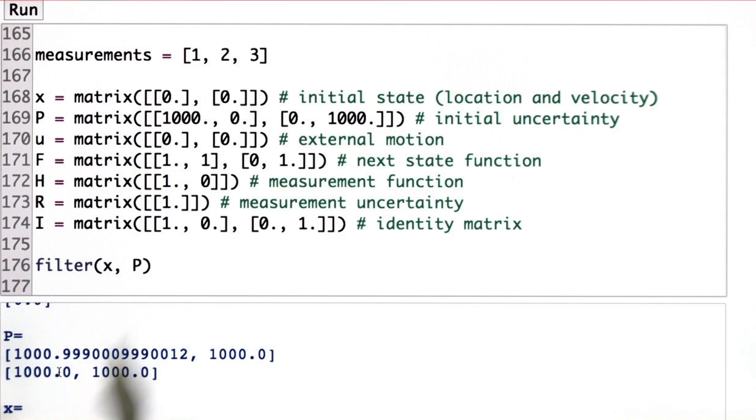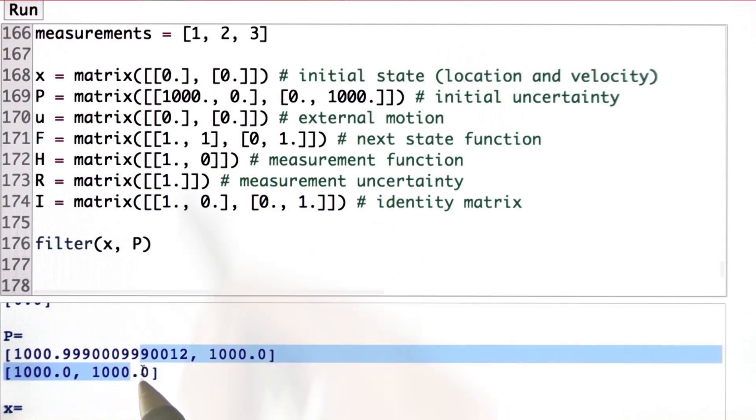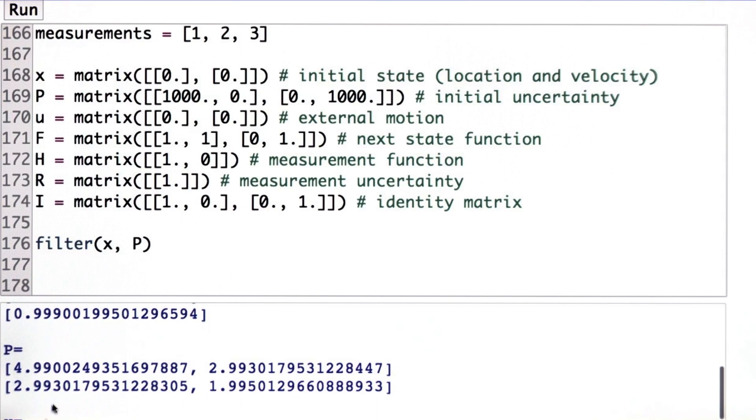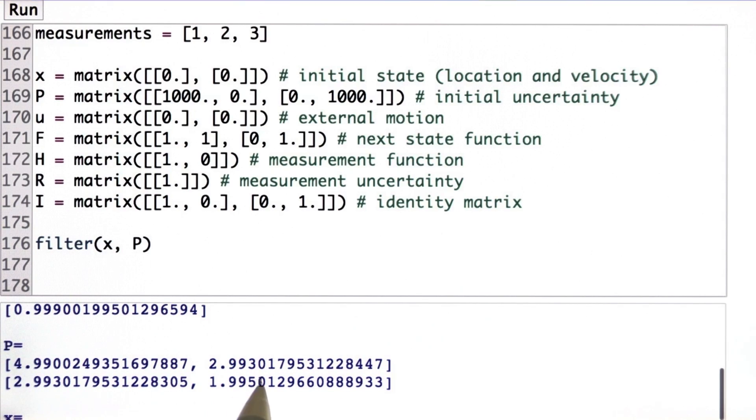And then when I observe again the 2, I want the output to now tell me that my next prediction is 3. It's the observation plus the prediction. But now I have a really good estimate on what the velocity is. It's essentially 1. And the reason is my Kalman filter was able to use the Kalman filter equations to find this value.